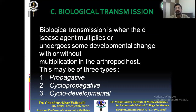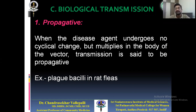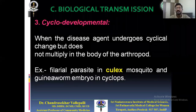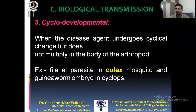In biological transmission, the disease agent multiplies or undergoes developmental change within the arthropod host. There are three sub-types: propagative, cyclo-propagative, and cyclo-developmental. Propagative: the agent multiplies in number but undergoes no cyclical change — as in plague bacilli in rat flea. Cyclo-propagative: the agent undergoes cyclical change and multiplies — for example, malarial parasite in Anopheles mosquito. Cyclo-developmental: the agent undergoes cyclical change but does not multiply — for example, filarial parasite in Culex mosquito and guinea worm embryo in Cyclops.